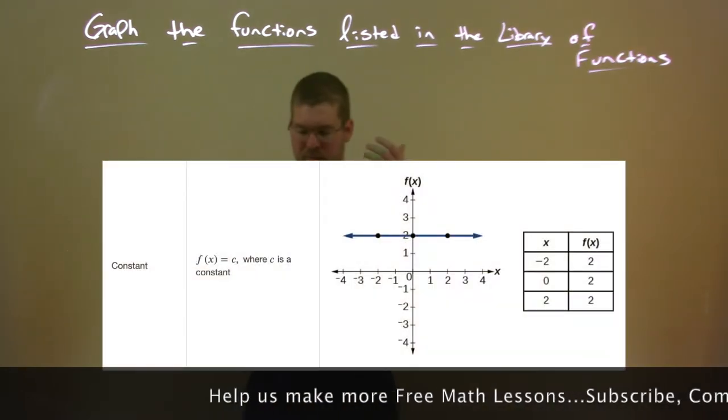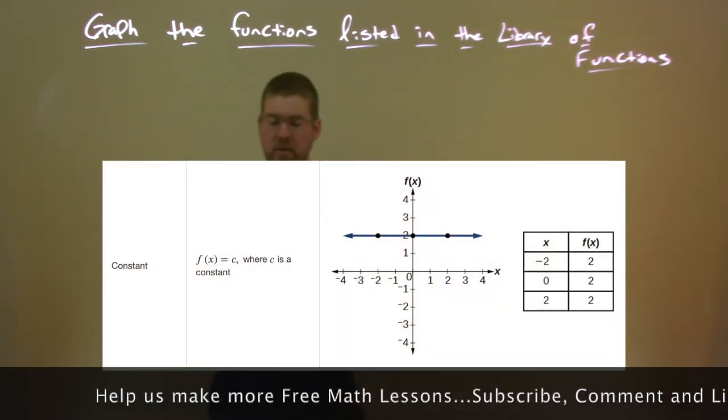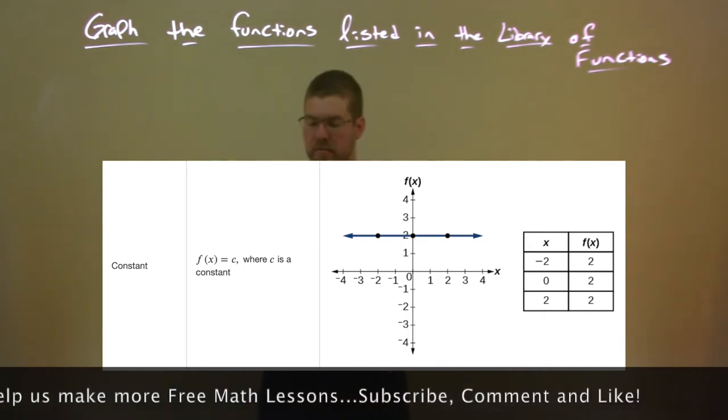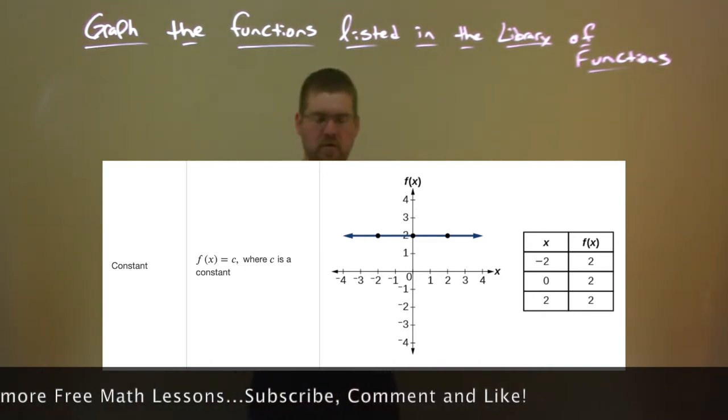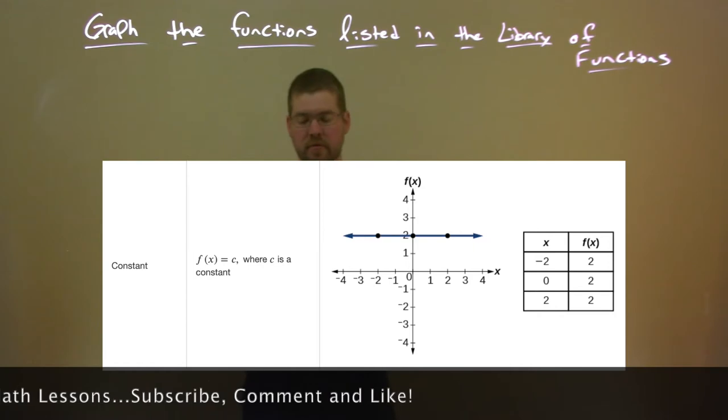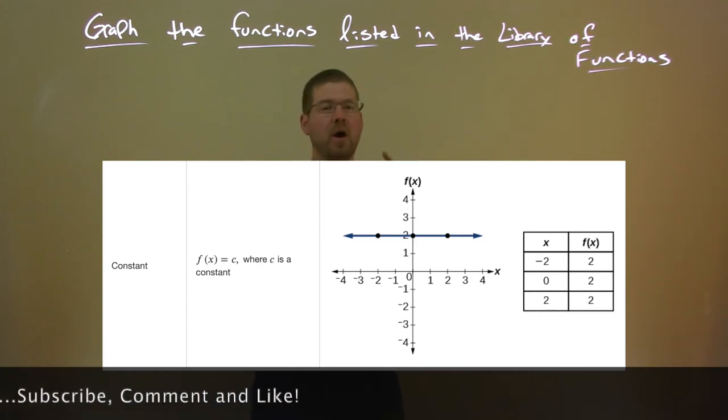The first one is a constant, f of x equals c, where c is a constant. Notice we have that horizontal line. We can see the input values of negative 2, 0, and 2 all have the same output value of 2.